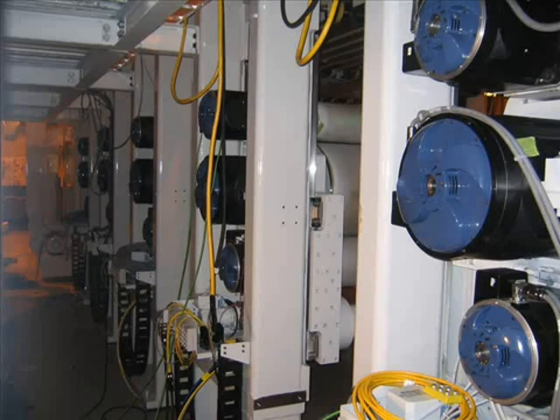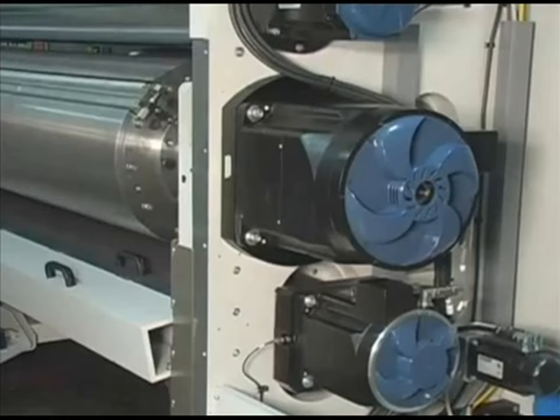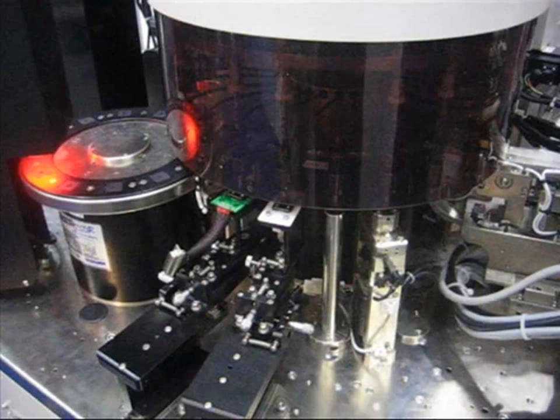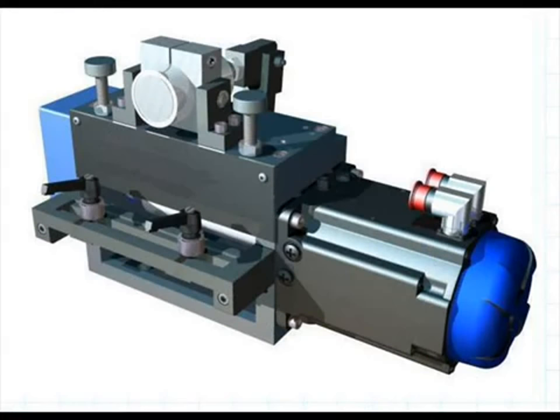The Kollmorgen AKD direct drive servo systems are used in industry-leading machines where precise motion control is required. These machines include flexographic printing, precise indexing and part placement, precision machining, high-speed turrets, and cut-to-length machines.